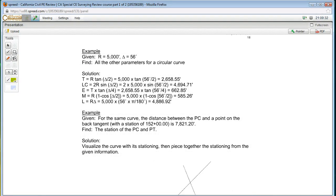Okay, so here we have a problem for horizontal curves, which are circular curves. You're given a radius of 5,000 feet and a central angle of 56 degrees. Figure out all the other parameters for a circular curve.